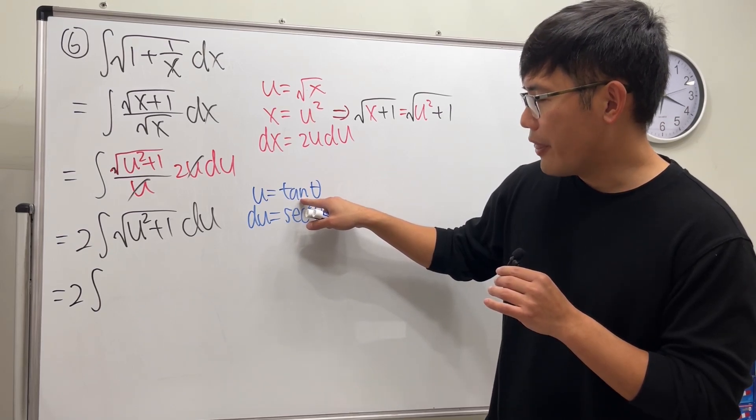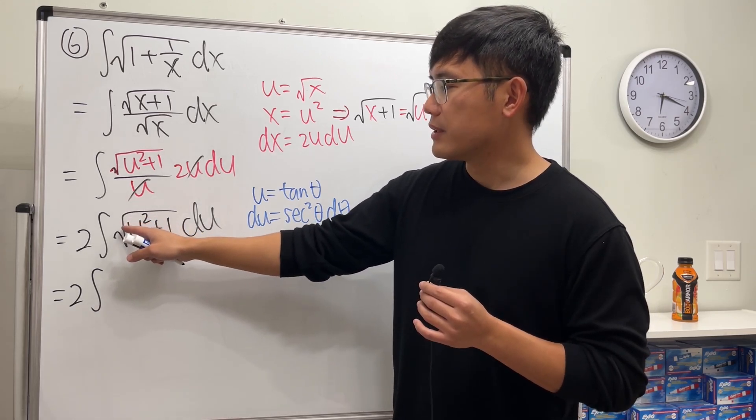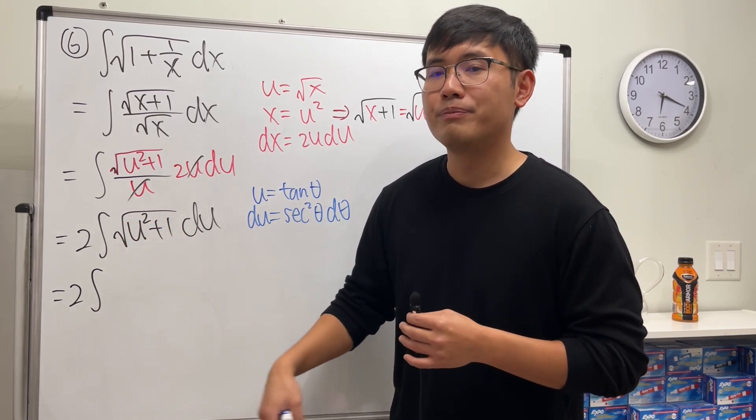So when we put tangent theta in here, tangent squared plus 1 is secant squared. Inside of the square root will give us secant.